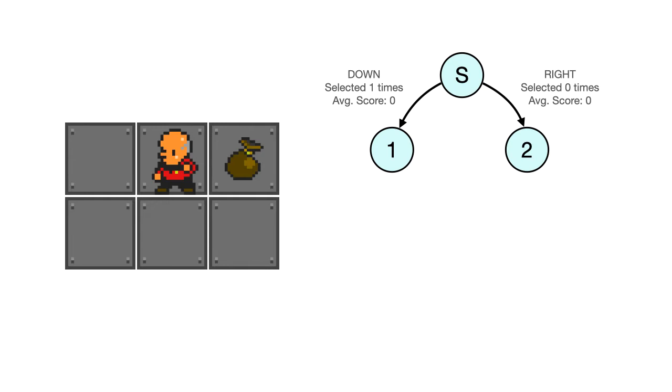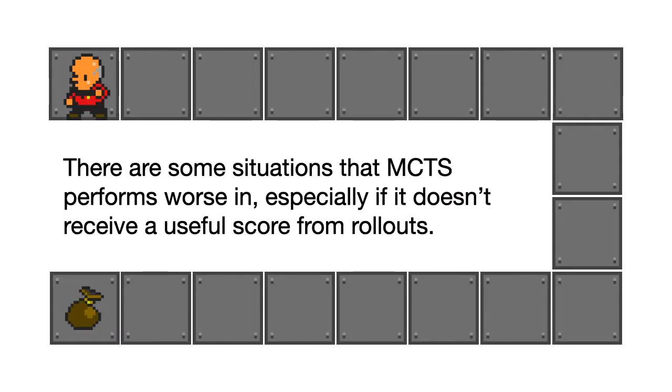Now MCTS does have some situations that it doesn't like. So for example if there's a scenario where the rollouts, these random playouts, are not getting good feedback then MCTS might struggle here to kind of get what we want from it. So in this case our person kind of just wanders around up this top here because none of its random playouts end up finding the bag, and so it just sort of goes back and forth, it doesn't really know where to go.